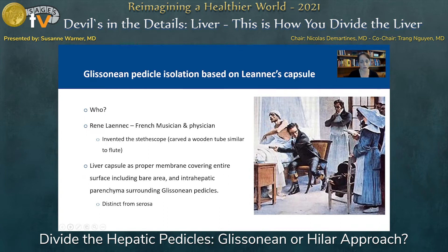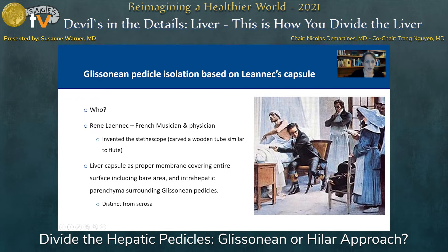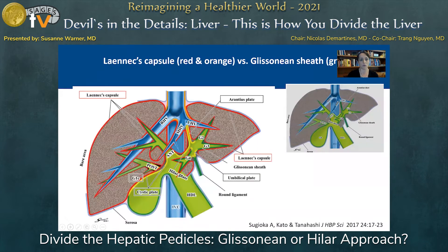They based it on a French physician from the 18th and 19th century by the name of René Laennec, who was a French musician and physician. He invented the stethoscope as a result of being an avid flautist. He described the liver capsule as a proper membrane covering the entire surface, including the bare area and intrahepatic parenchyma surrounding Glissonian pedicles, and that this was distinct from the serosa.